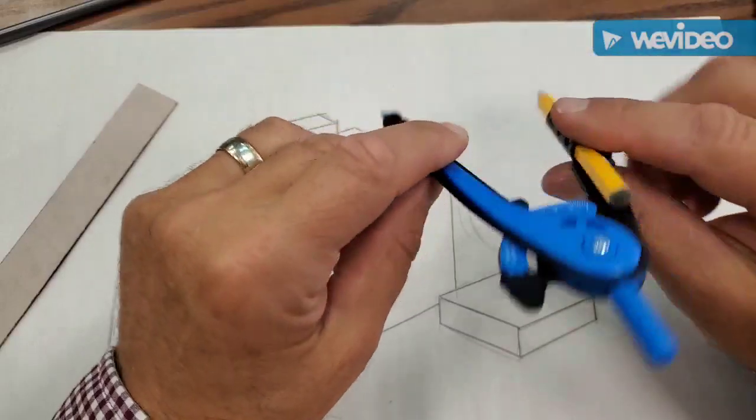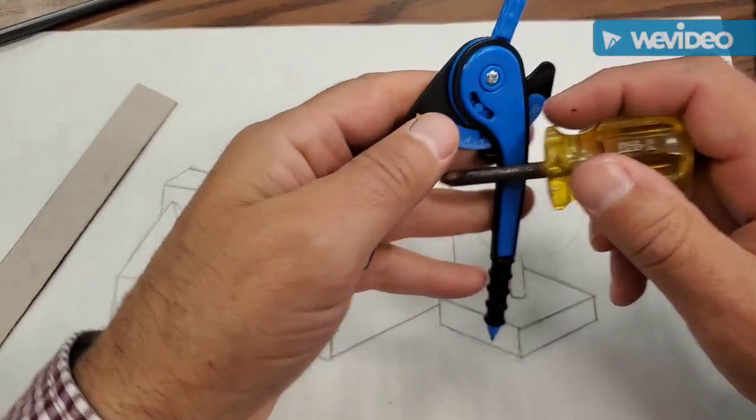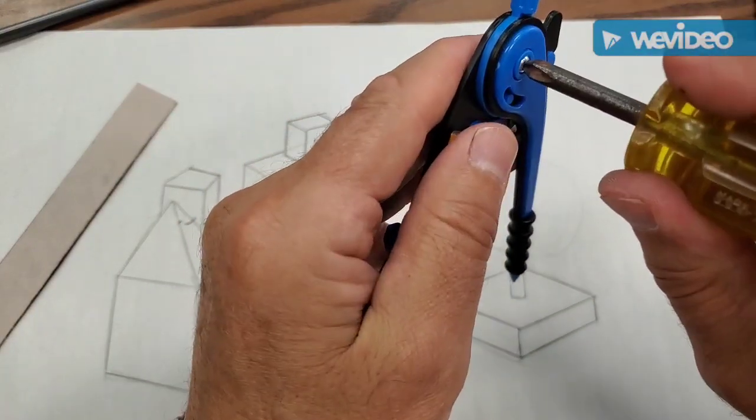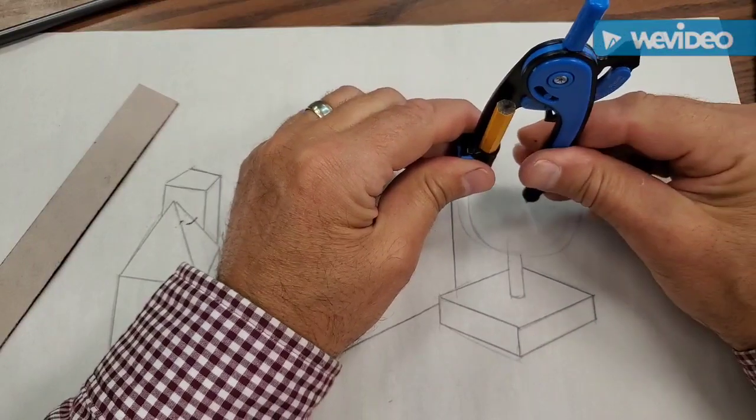Now, one thing. If your compass is really too flexible this way, I've got a little screwdriver that you can use right here to tighten that compass up. Okay, that way it holds itself really sturdy.